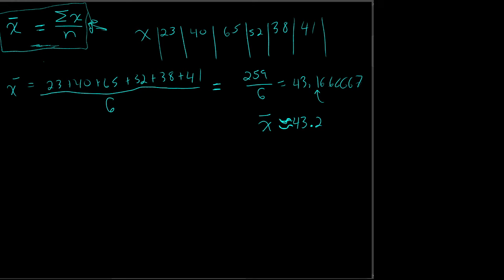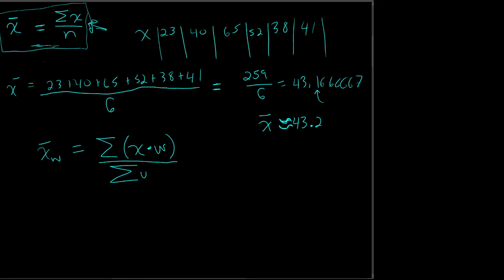We can do multiple evaluations, and a common thing is a weighted mean — I'll put a W here to say it's weighted. This happens when, like in this course, homework is worth a percent of the grade — it's not a one-for-one. A weighted mean is whatever the x value is times its weight, divided by the sum of all the weights.